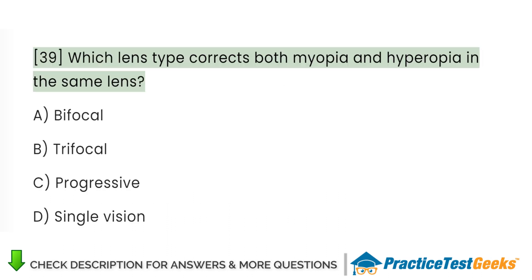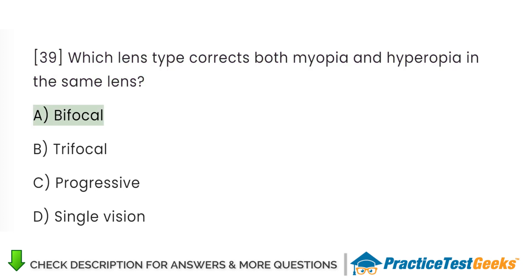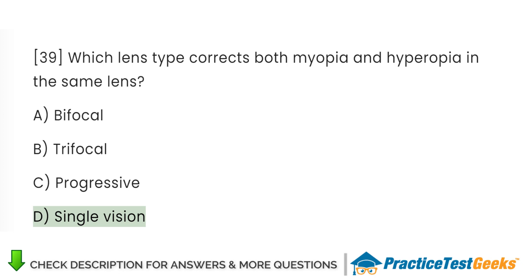Which lens type corrects both myopia and hyperopia in the same lens? A. Bifocal. B. Trifocal. C. Progressive. D. Single vision.